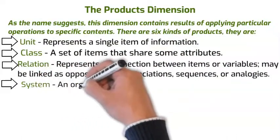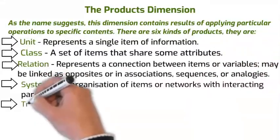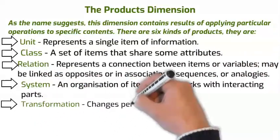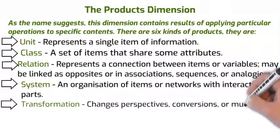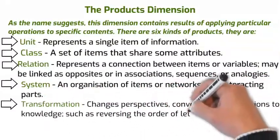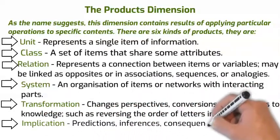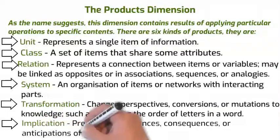System: An organization of items or networks with interacting paths. Transformation: Changes perspectives, conversions, or mutations to knowledge, such as reversing the order of letters in a word. Implication: Predictions, inferences, consequences, or anticipations of knowledge.